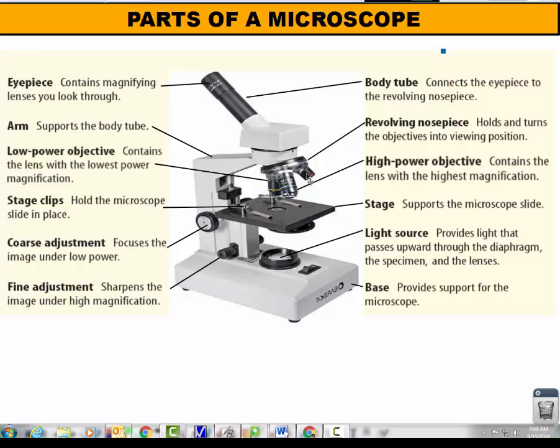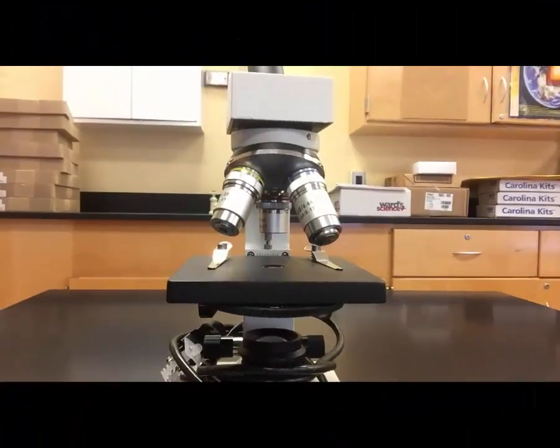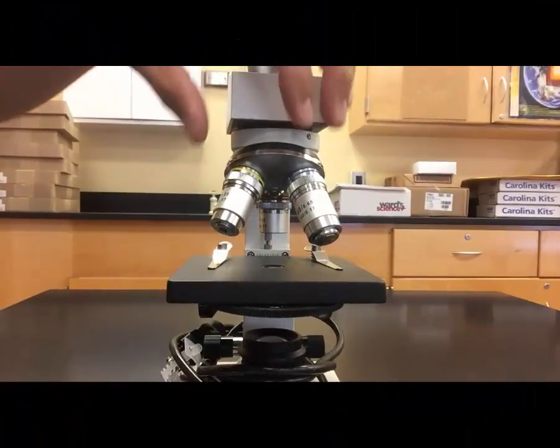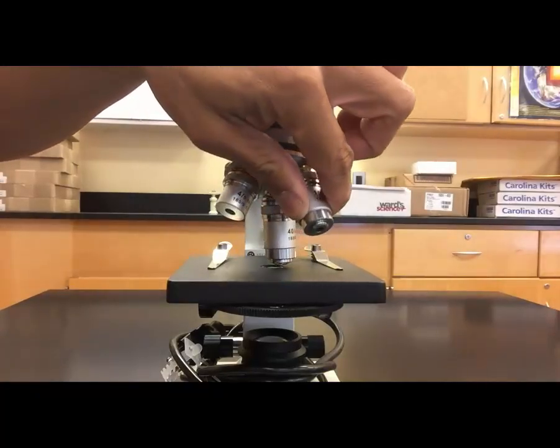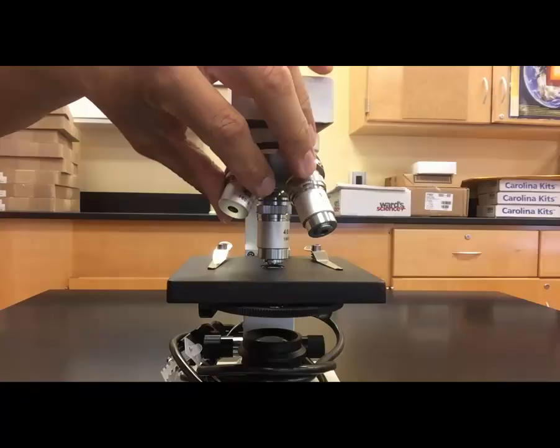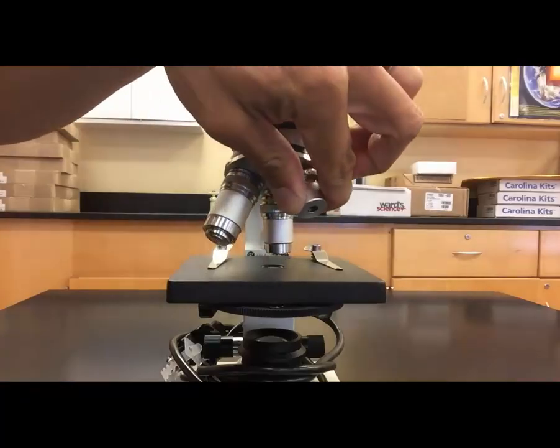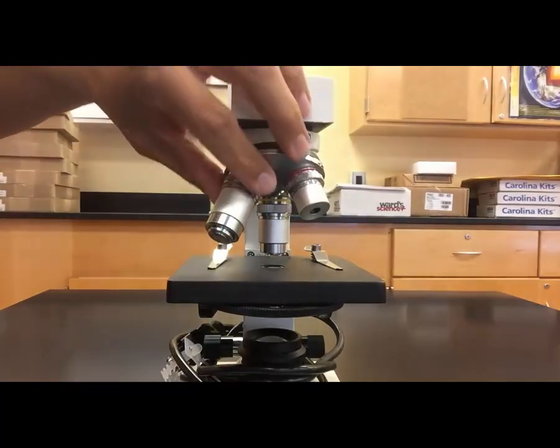Now let's take a look really briefly on how to use the revolving nosepiece to click an objective lens into place. To select the proper objective lens is simple. All you have to do is rotate the lenses until they click into place as you can hear in this clip. And that's all you have to do.